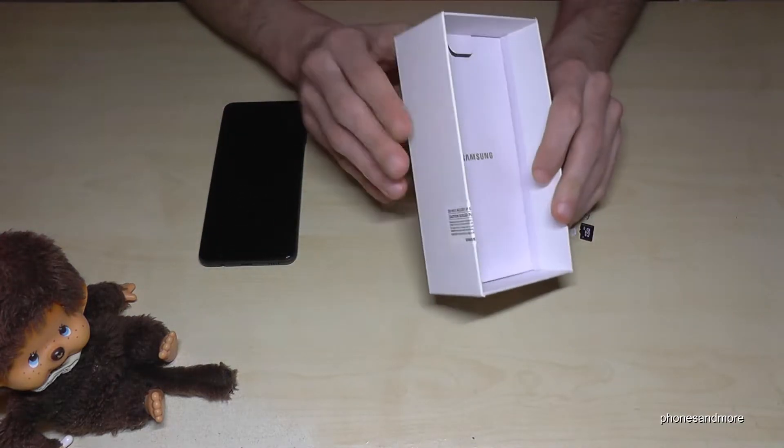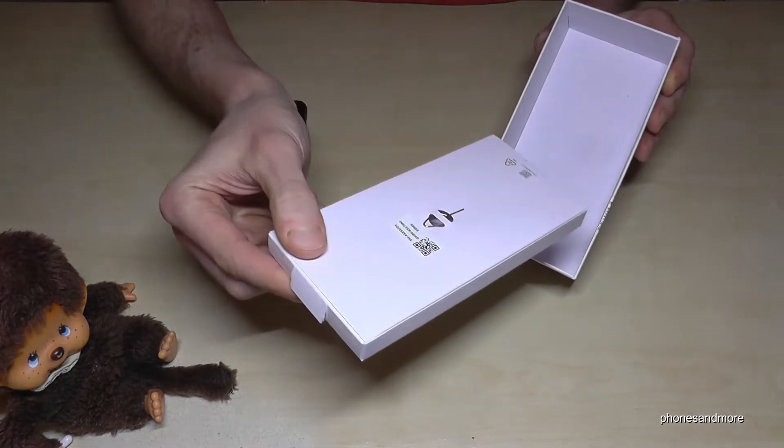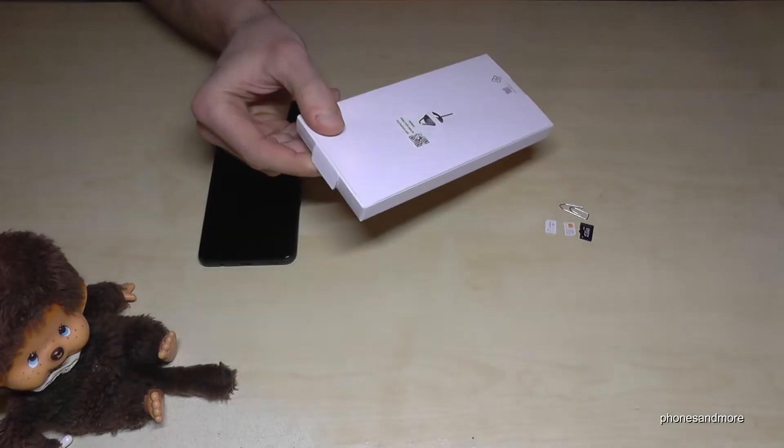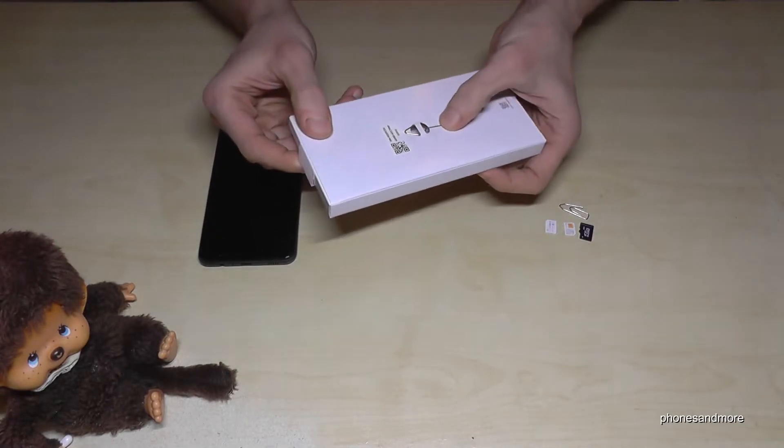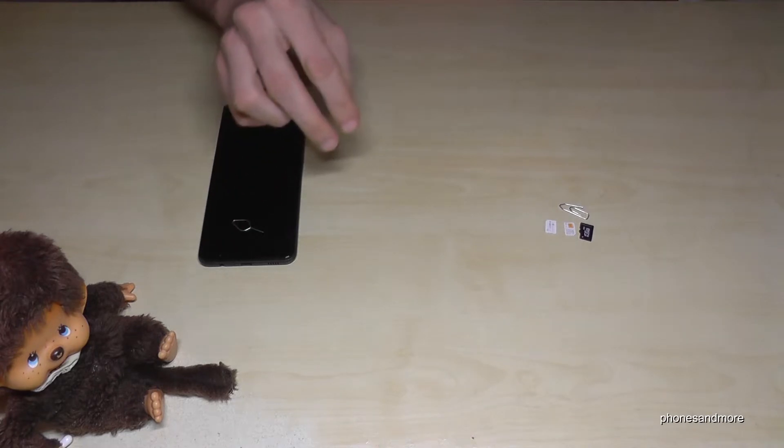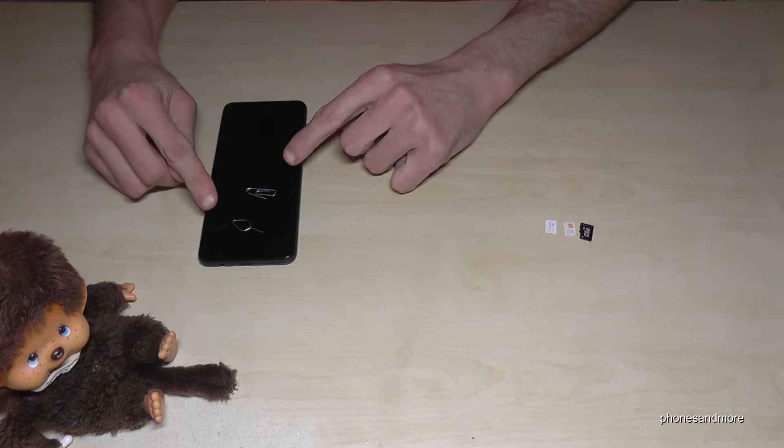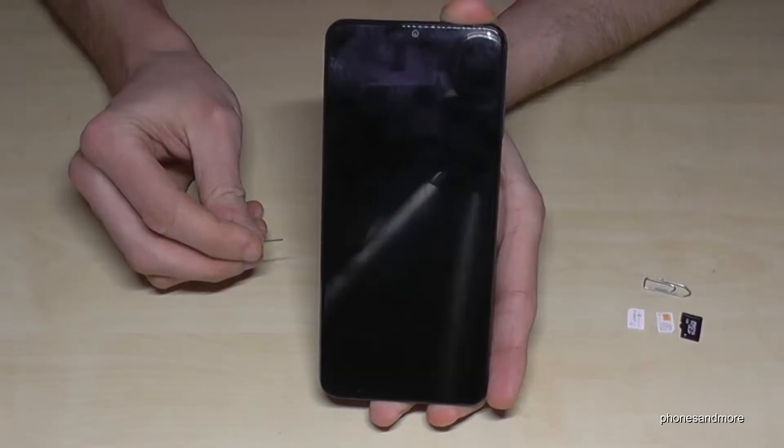Here we have the SIM ejection tool. Just remove it like this. Otherwise, by the way, you can of course also use the edge of a good old paper clip.